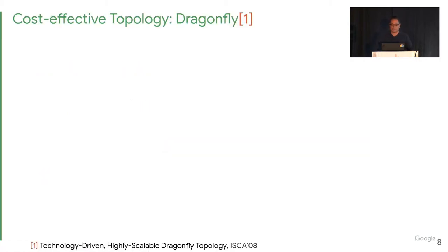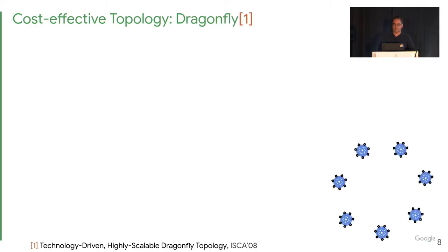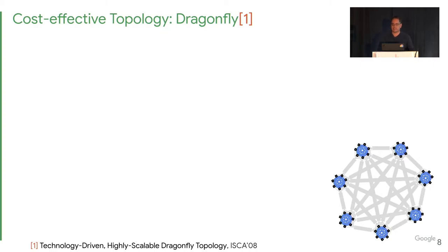The Dragonfly topology is a direct connect topology from the HPC community — by direct connect, I mean it's directly connected to the switch. Imagine a square representing the TIN connected to circles that are the hosts. When we organize them together in a fully connected mesh, that forms the first dimension of the Dragonfly topology, which we call the pod. If we organize these pods in another layer of fully connected mesh, that's the second dimension, forming the two-dimensional Dragonfly topology.